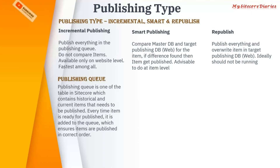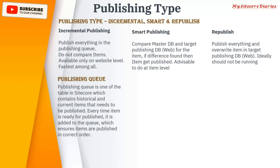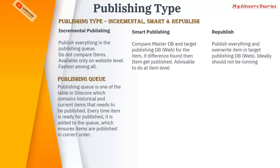When you use incremental publish, it adds that item into the queue. That queue is a table in Sitecore called the publishing queue. Every time you add an item, it gets added into the queue, and then that queue is published sequentially. Incremental publish publishes everything in the publishing queue but does not compare items like smart publish does. It is available only at the website level, not the item level, and it is the fastest among all three publishing types.